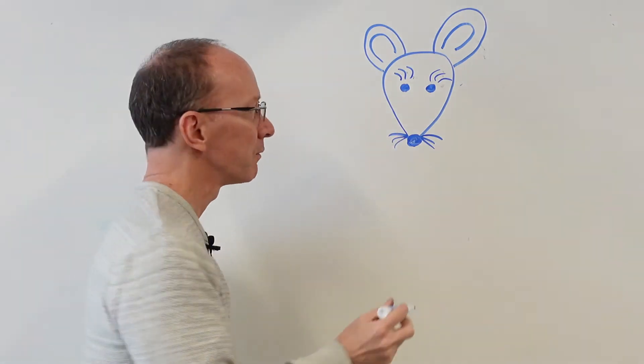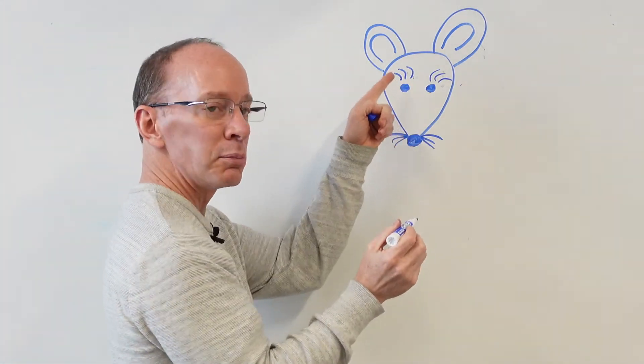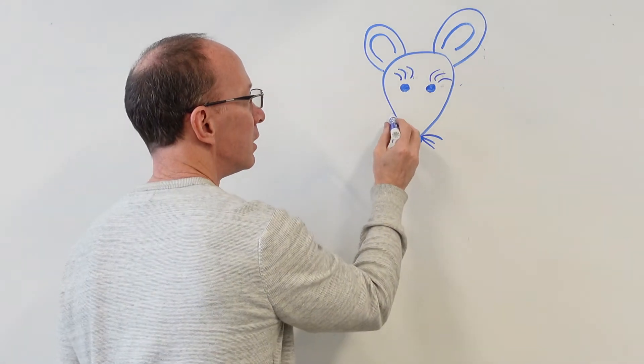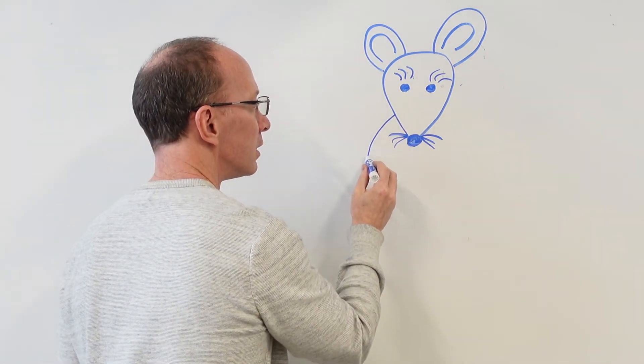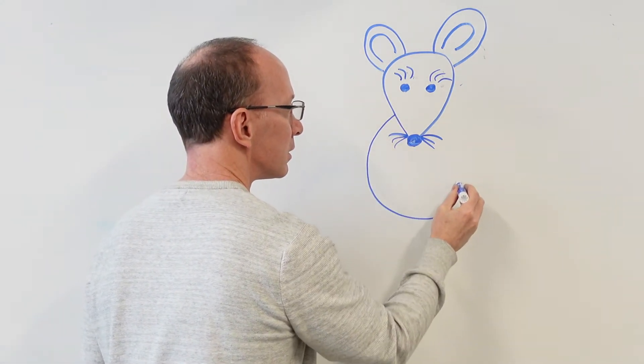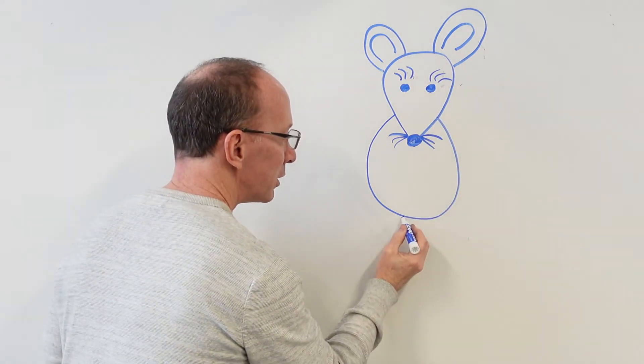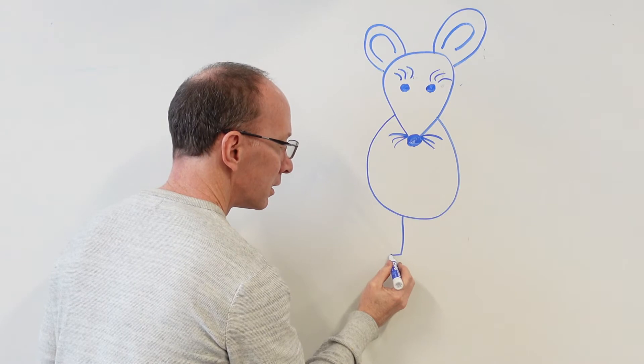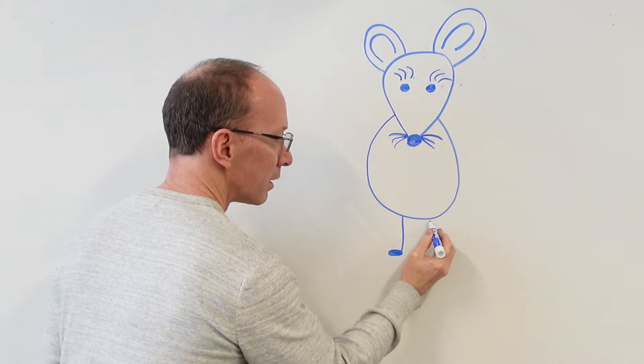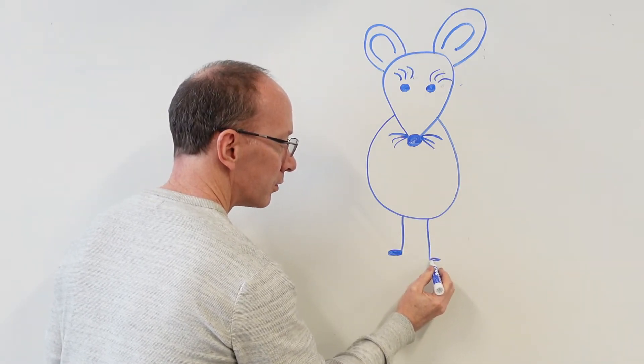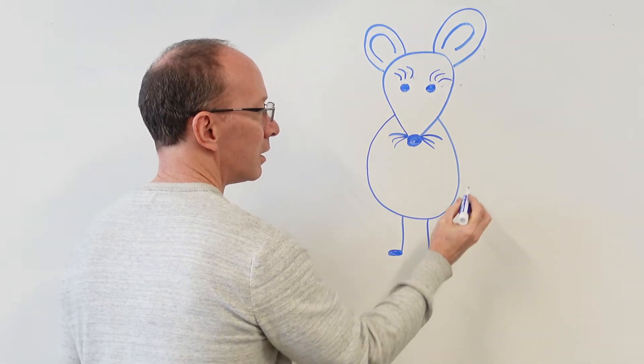Now for the body, once again, we're going to do this shape, but kind of switch it around. Just like that. Now we're going to do the feet coming down here. Another leg and then the foot.